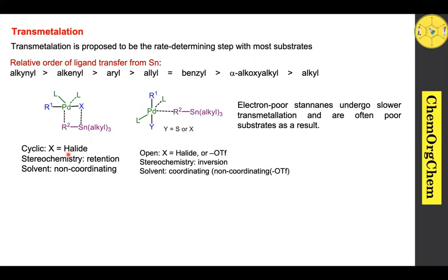In open transmetalation, X means halide or triflate, and the stereochemistry is inversion. That means when the substrate undergoes open transmetalation, the stereochemistry of the final product should be inversion stereochemistry. The solvent used is mostly a coordinating solvent, for example acetonitrile, HMPA, or DMSO. In the case of aryl triflates, a non-coordinating solvent also produces inversion stereochemistry.